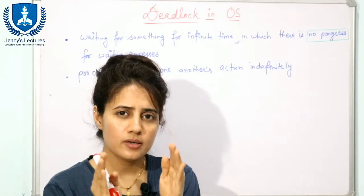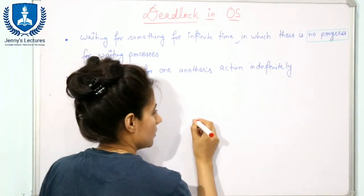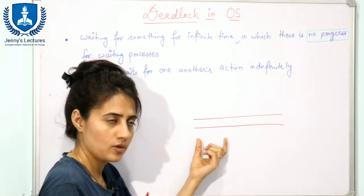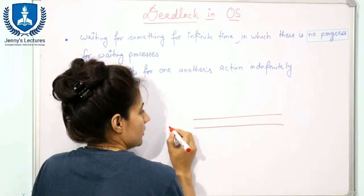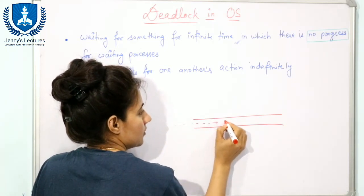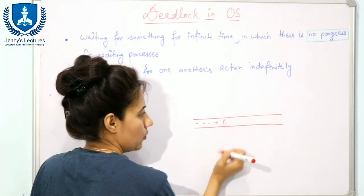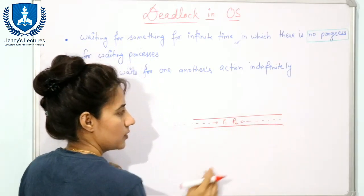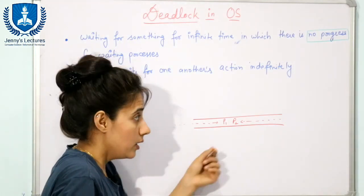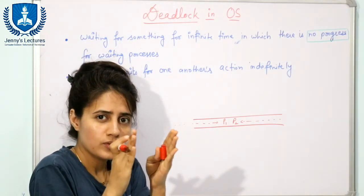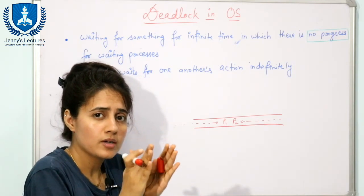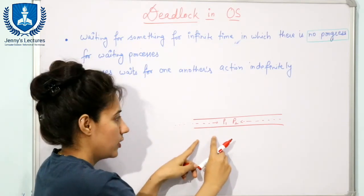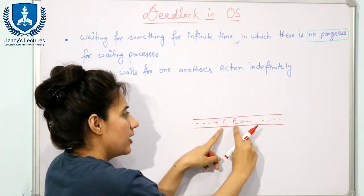Suppose a very narrow street is there where only one person can pass at one time. Now suppose one person P1 is coming from one side and at the same time another person P2 is coming from the other side. The street is so narrow that only one person can pass — that is the condition.